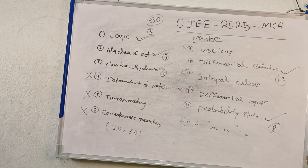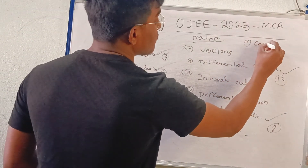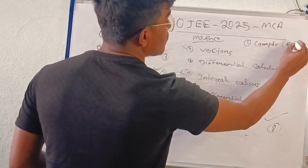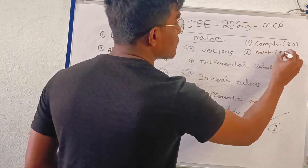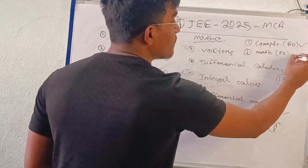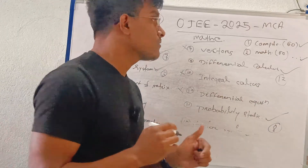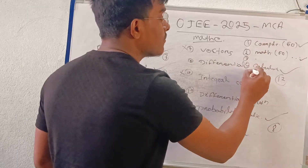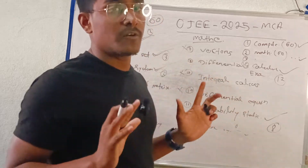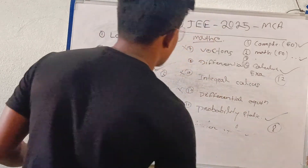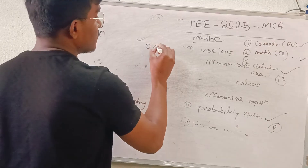We have enough to cover. In the next video, we will cover the total computers section. I don't have additional questions. I have a full question set of math — 60 questions. I need to cover my computer section. First: Computers cover, then Maths.